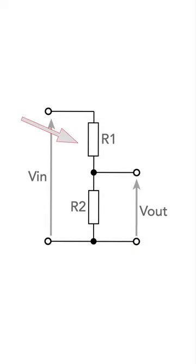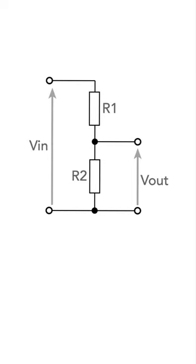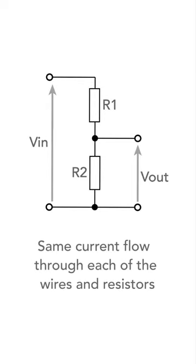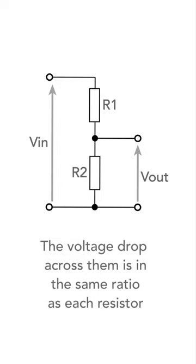In its simplest form it consists of just two resistors in series. As the same current flows through both resistors, the voltage drop across them is in the same ratio as the value of each resistor.